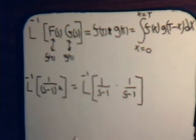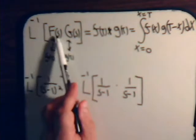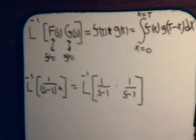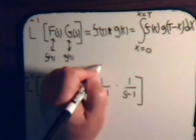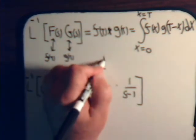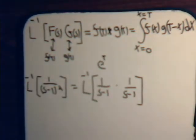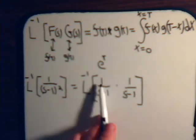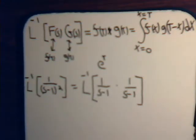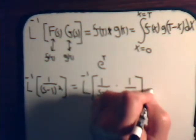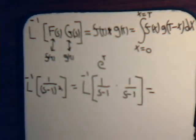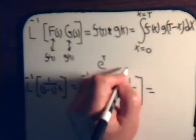Now, what function does 1 over s minus 1 correspond to? In other words, 1 over s minus 1 is the Laplace transform of what function? We need to know our basic Laplace transforms. That of course is just e to the t. The Laplace transform of e to the t is 1 over s minus 1. So this is equal to — and of course this other factor is also e to the t.